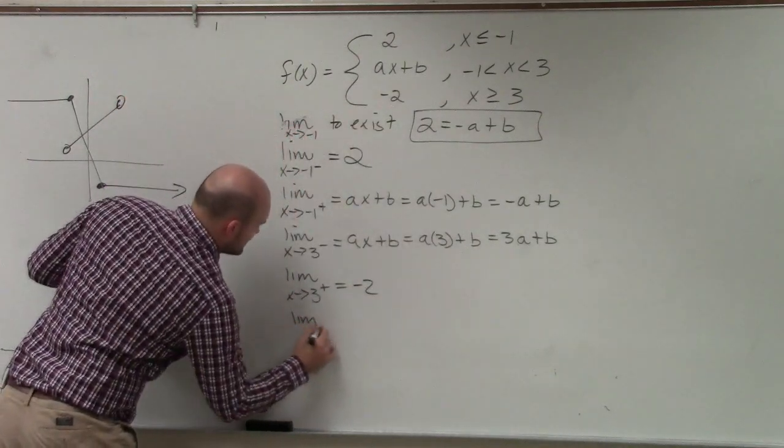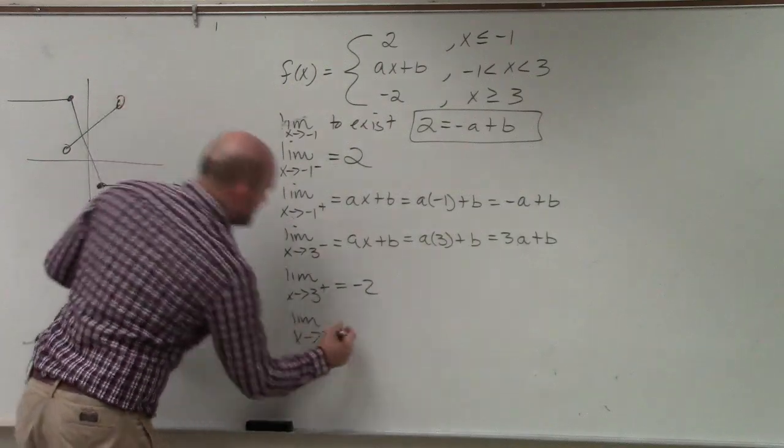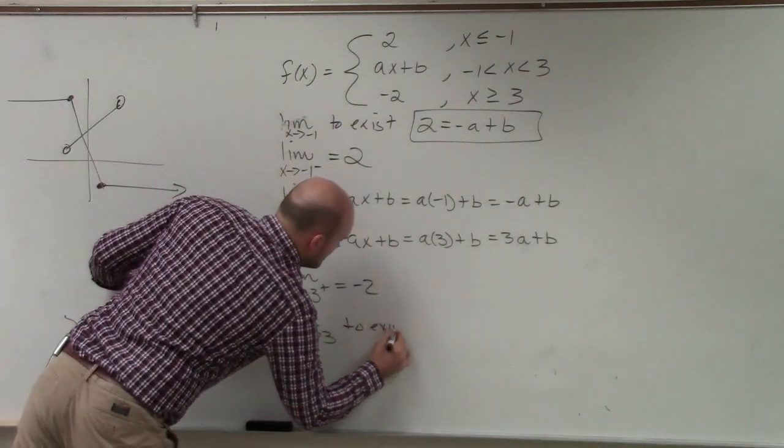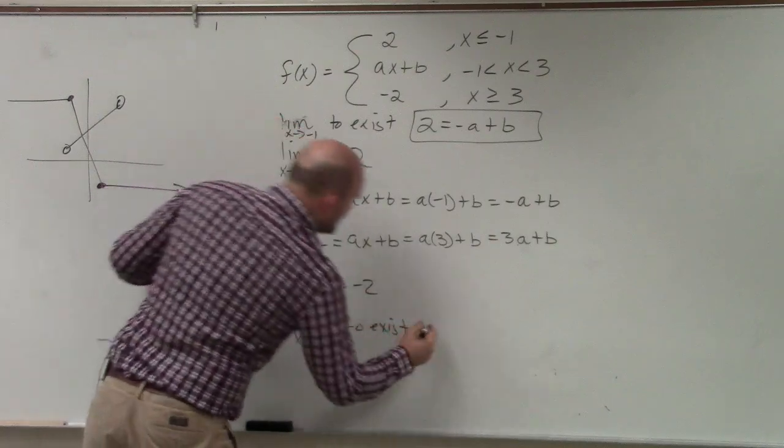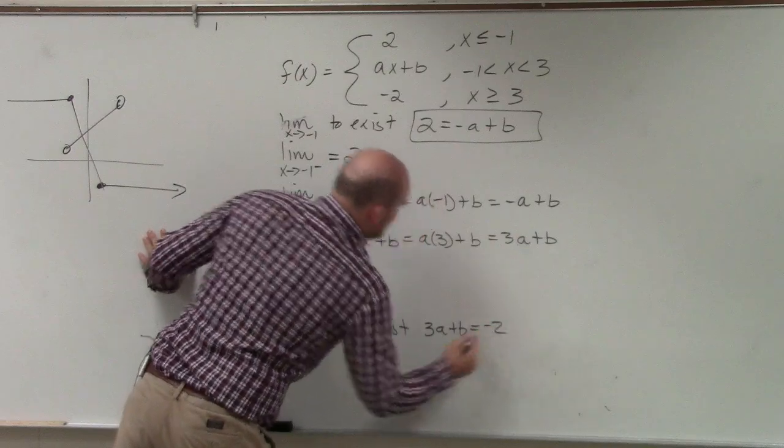Evaluate the limit as X approaches three from the right, which is just negative two. Again, for the limit as X approaches three to exist,